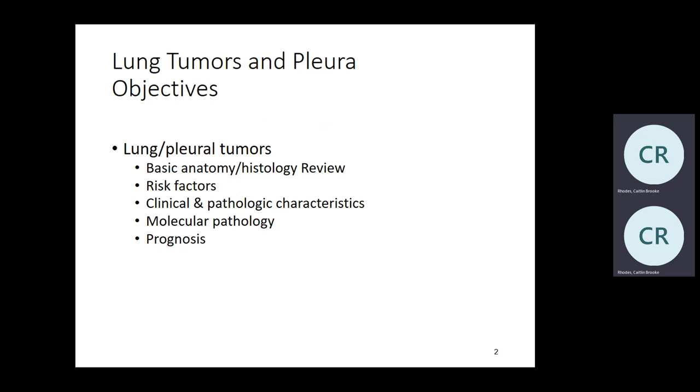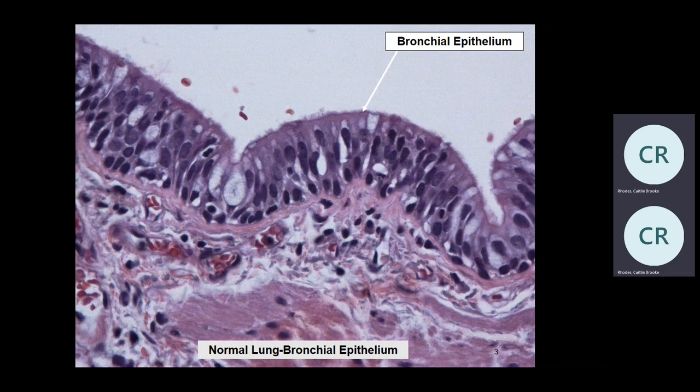Know your histology well, because everything is based on histology. All the tumors are based on histology. This is an airways lining — a bronchial lining, a bronchiolar mucosa: pseudostratified columnar epithelium.